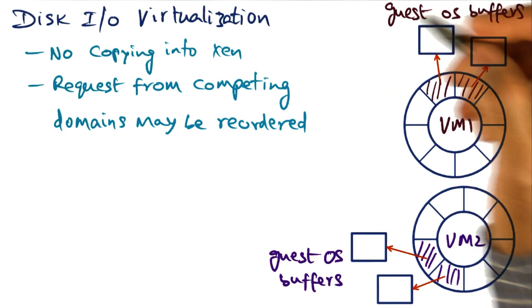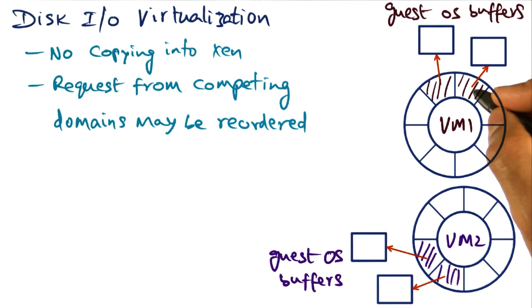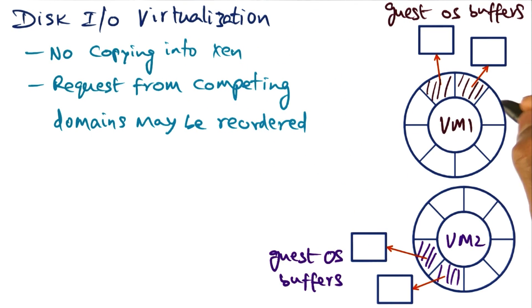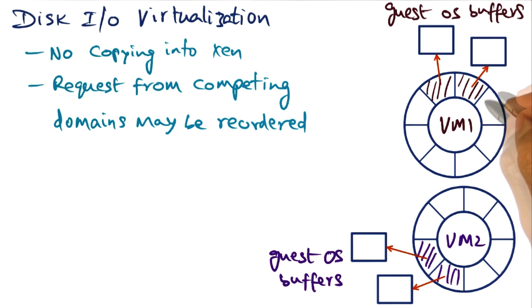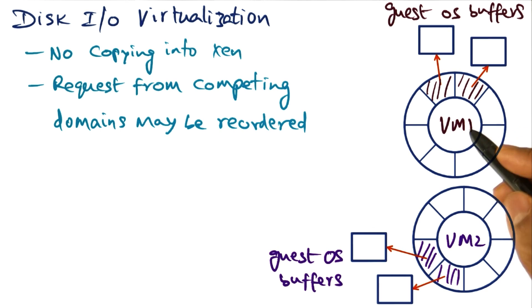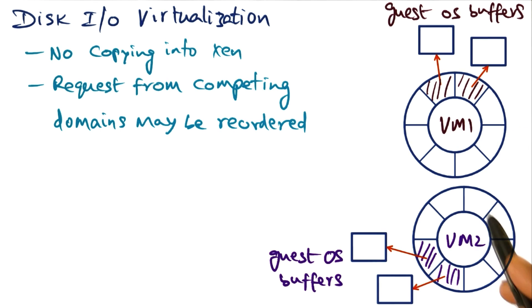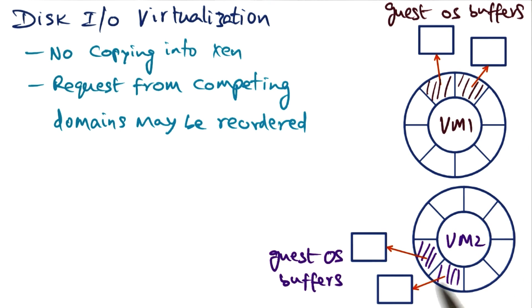Disk IO virtualization works quite similarly. Every VM has an IO ring which is dedicated for disk IO. This is an IO ring associated with VM one. This is an IO ring associated with VM two.